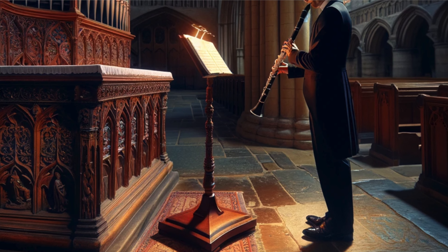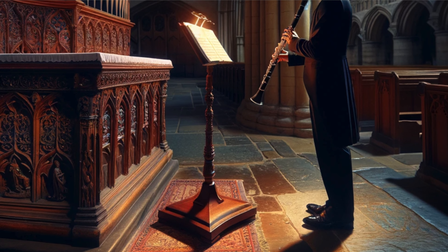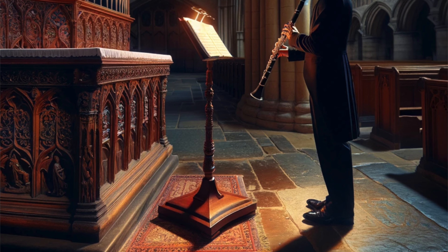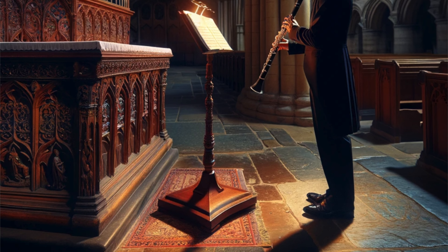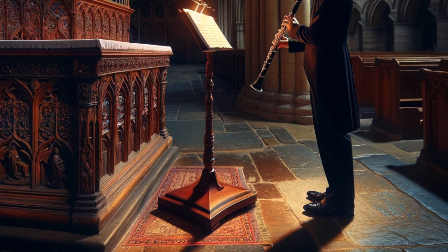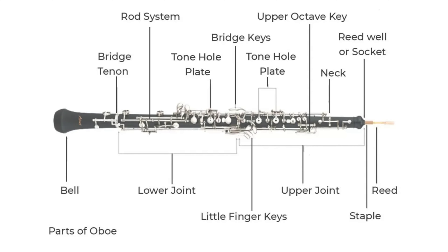The next factor is the double reed. The oboe's double reed consists of two pieces of cane bound together, which vibrate against each other when air is blown through them. This double reed design provides a consistent and stable sound production, minimizing fluctuations in pitch. We should also speak about tuning mechanisms — oboes are equipped with various tuning mechanisms, such as the ability to adjust the length of the reed or manipulate the position of keys to fine-tune the instrument's pitch.